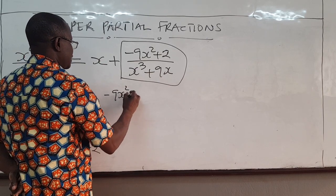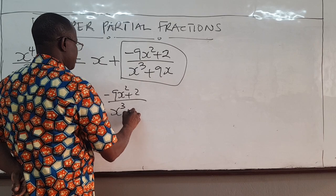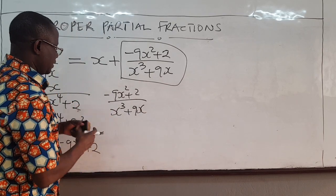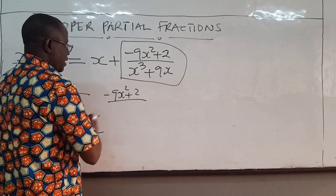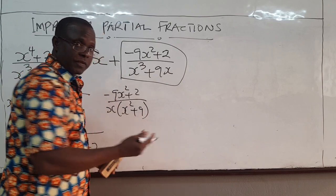Negative 9x squared plus 2 all over x cubed plus 9x. Well, notice that you can actually write us, you can factorize x out. You can factorize x out and have x squared plus 9.